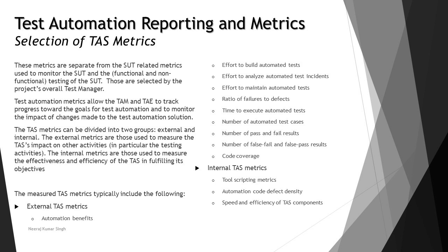Here are some common examples — measured test metrics typically include two categories: external and internal. External metrics are those that depend on the tool, and internal metrics are those which depend on us. External test metrics include: automation benefits, effort to build automated tests, effort to analyze automated test failures, effort to maintain automated tests, ratio of failures, time to execute, and number of automated tests. Internal test metrics include scripting factors, automation code defect density, and speed and efficiency of tasks.